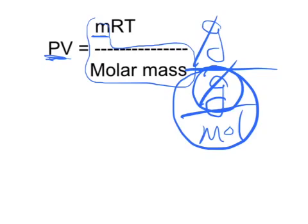So the next thing we really want to do here is to rearrange this equation to get molar mass by itself. So we're going to move molar mass up here and pressure and volume down here so that it becomes this.